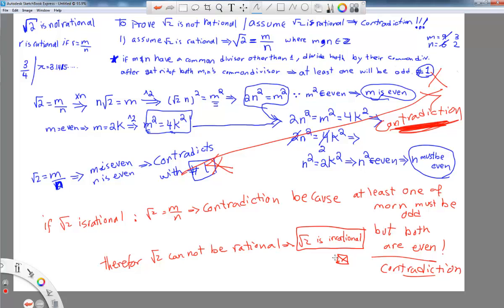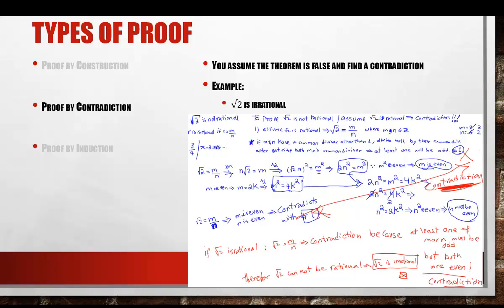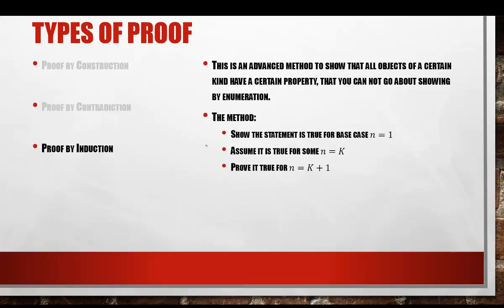Since we cannot have a contradiction, there must be something wrong with the assumption that square root of 2 is rational. Therefore, square root of 2 is irrational. End of proof. That's proof by contradiction: you have a statement to prove, you assume the statement is wrong, logically conclude a contradiction, and since contradictions are impossible, the original statement must be true. We now move on to the next kind of argument: proof by induction.